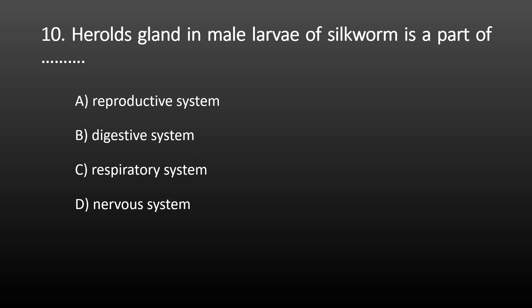Next MCQ: the Herules gland in male larvae of silkworm is a part of which system? Options are: reproductive system, digestive system, respiratory system, and nervous system. The Herules gland in male silkworm larvae is a part of the reproductive system. The correct option is reproductive system.